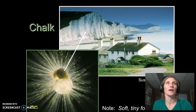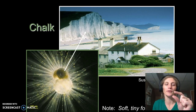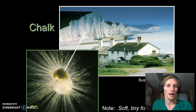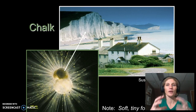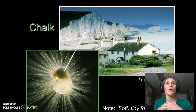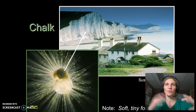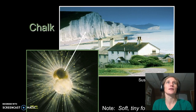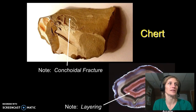Chalk — we're looking at the White Cliffs of Dover in the background and a picture of a foraminifera. This is a very tiny microorganism that lives in the ocean and makes its shell — the little bulbs are made out of calcium carbonate. As it grows, it pulls calcium and carbonate from the water to make its shell. When it dies, it sinks to the bottom of the ocean, and if you pile them all up, they become cemented together to create chalk — very fine grain calcium carbonate sediment.